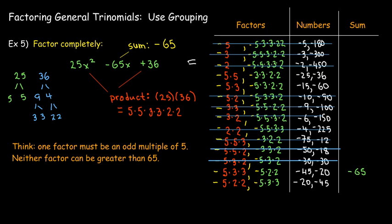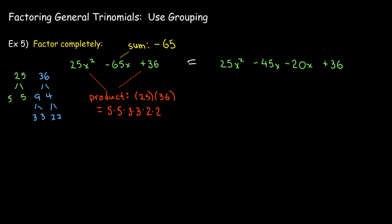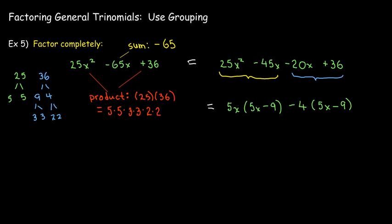Using a little process of elimination, I'm really only down to a few options — and it turns out the numbers have to be negative 45 and negative 20. So I write negative 65x as negative 45x minus 20x. Looking at the first two terms and the last two: the common factor in the first two is 5x, and in the last two it's 4. My first binomial is (5x − 9) and the second is (5x − 4). And there's my factorization.